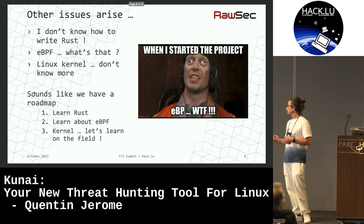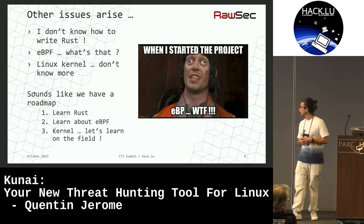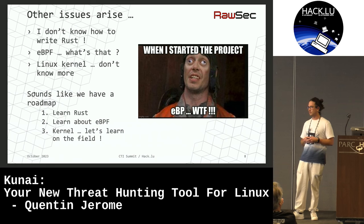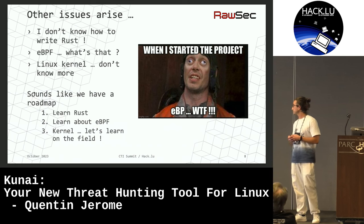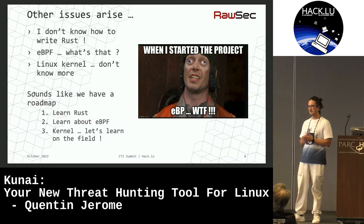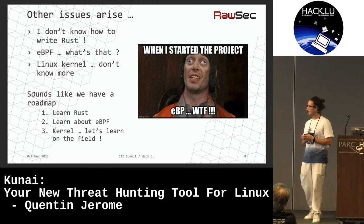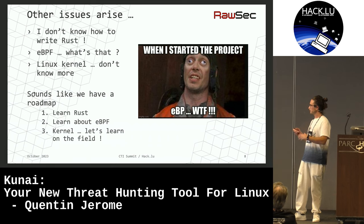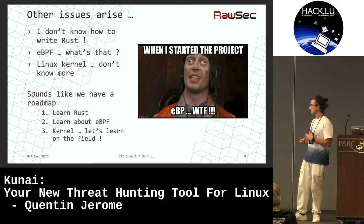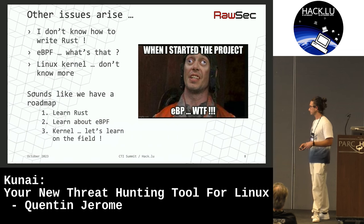But I have another issue now: I don't know how to write a line of Rust. I don't know what eBPF is. And the Linux kernel — I don't know much more. So we have a pretty nice roadmap. First, learn Rust, learn about eBPF. And for the kernel, of course it's very complex — you cannot know everything. Just learn it on the field.